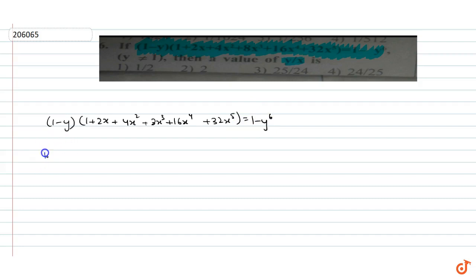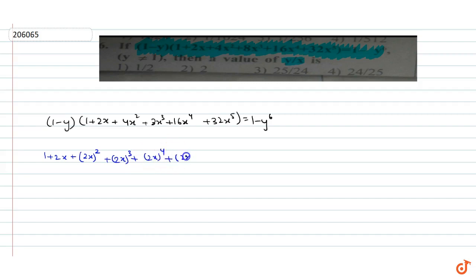That means 1 plus 2x plus 4x squared plus 8x cubed plus 16x to the power 4 plus 32x to the power 5 is equal to (1 minus y to the power 6) divided by (1 minus y).